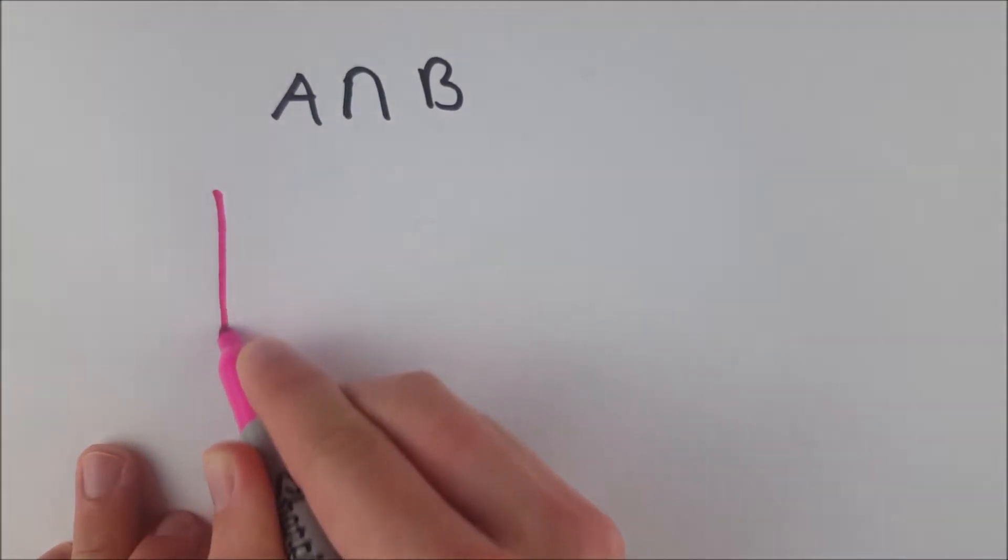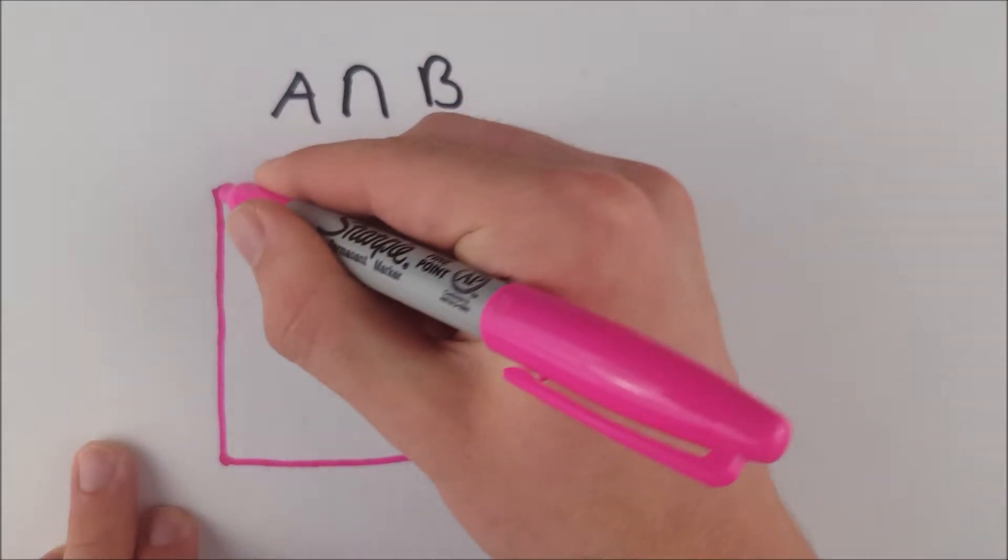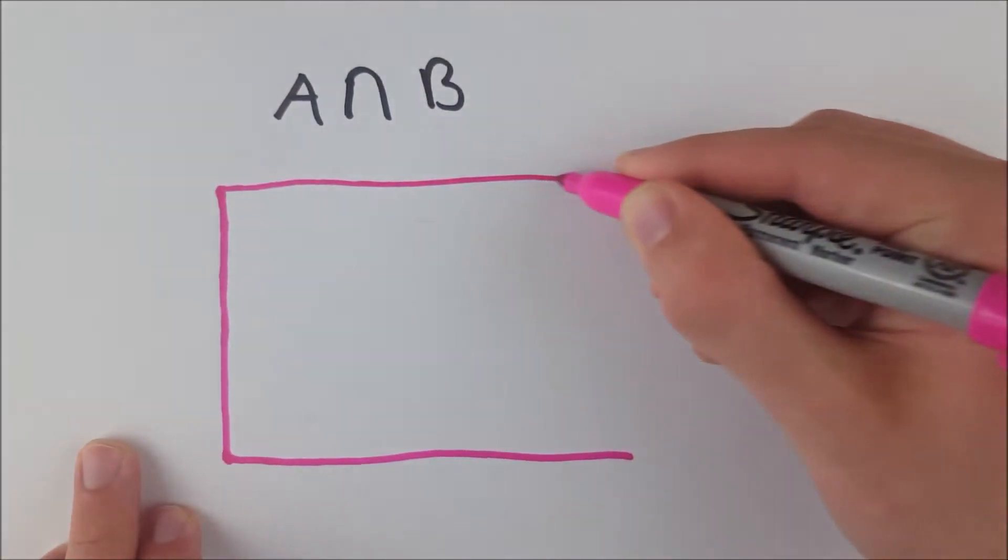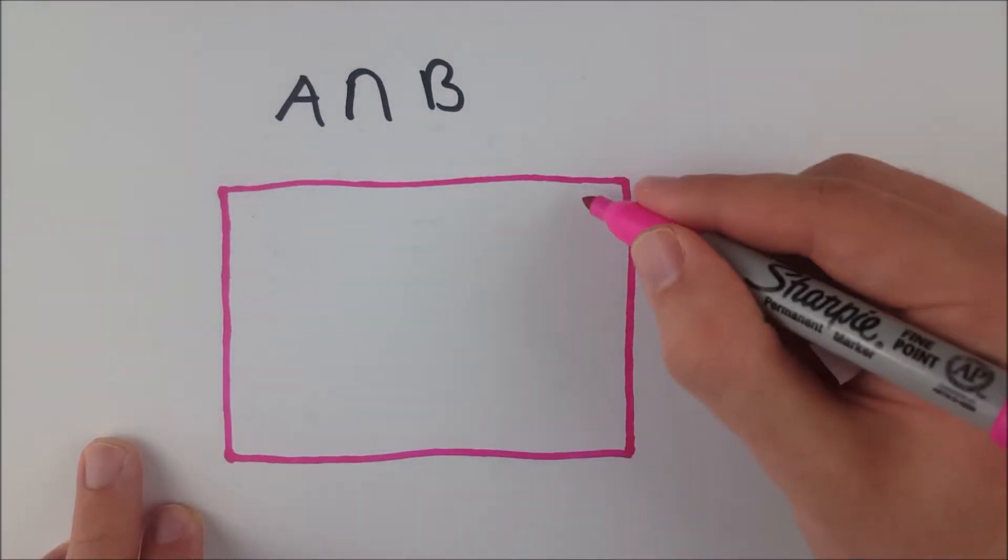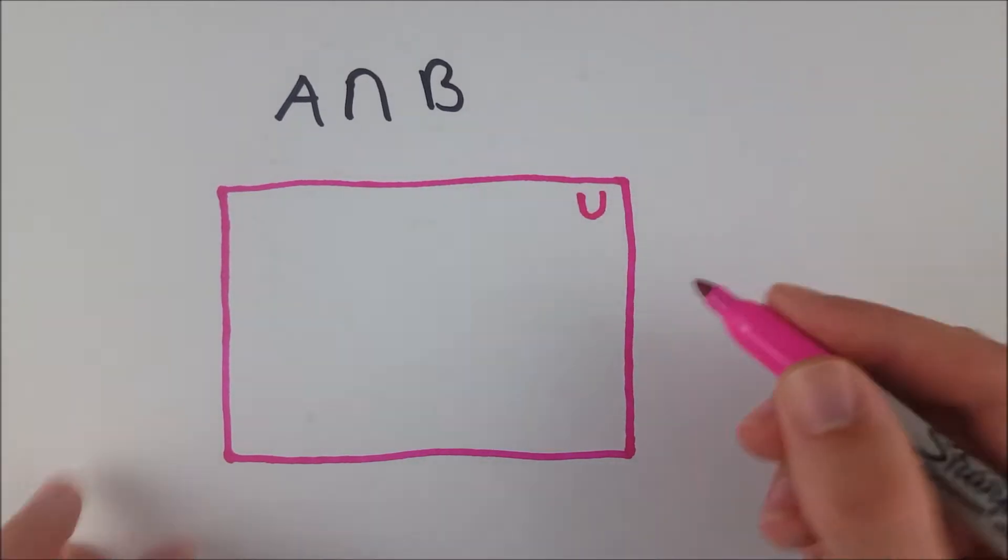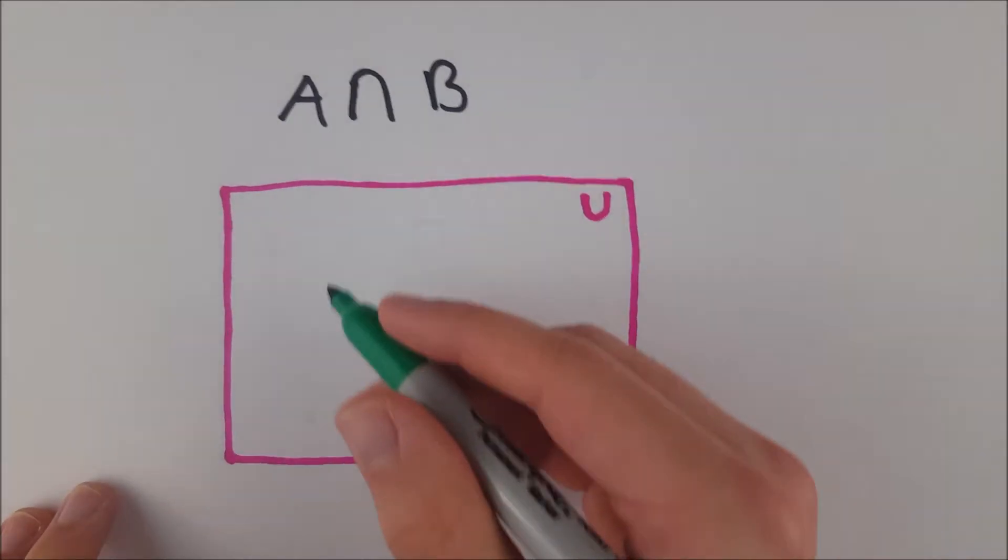So we'll draw our box, our universe here, where all of our sets live. I'm not going to make the mistake of making it too small, like I did last time. This isn't totally necessary, drawing the universe for this lesson, but I'm going to anyways, because I think it's a nice part of Venn diagram notation for sets.